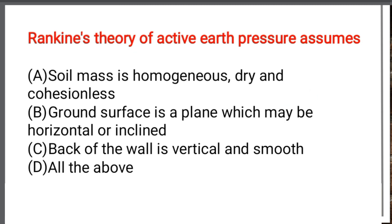Next question: Rankine's theory of active earth pressure assumes — Option A: Soil mass is homogeneous, dry, and cohesionless. Option B: Ground surface is plain, which may be horizontal or inclined. Option C: Back of the wall is vertical and smooth. Option D: All of the above. The correct answer is Option D: All of the above.